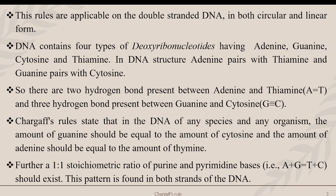Further, there is a 1:1 stoichiometric ratio of purine and pyrimidine bases. That is, adenine plus guanine equals thymine plus cytosine. This pattern is found in both strands of the DNA.